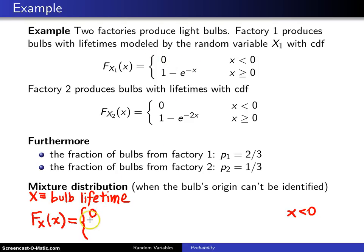But what you have here is with your P1 being two thirds, you have two thirds multiplied by this CDF, one minus e to the minus x.